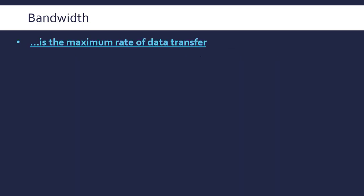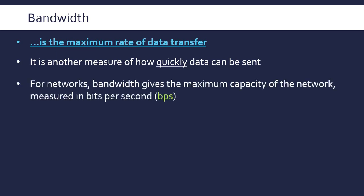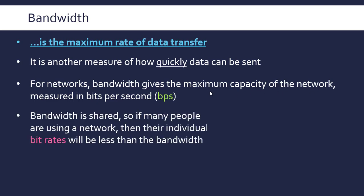Another really important term is bandwidth. Bandwidth is the maximum rate of data transfer, so it's another measure of how quickly data can be sent. For networks at least, bandwidth gives us the maximum capacity of the network, and it's measured in bits per second.